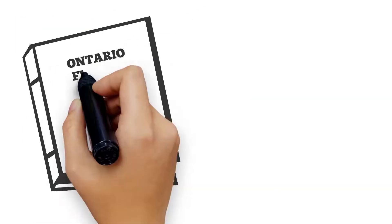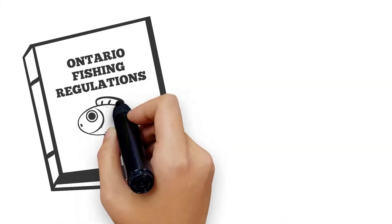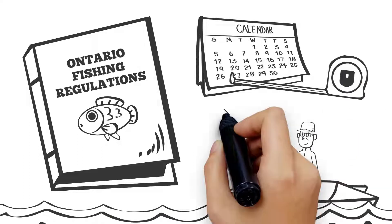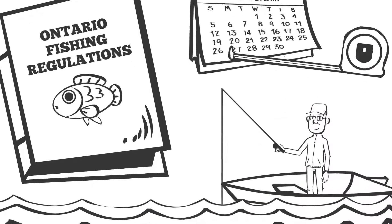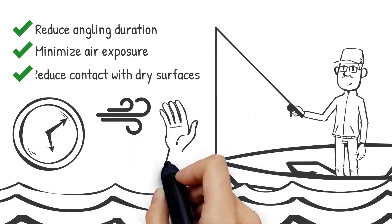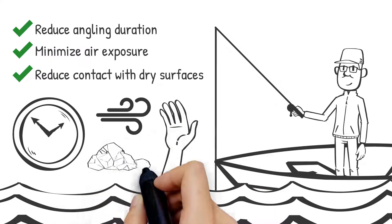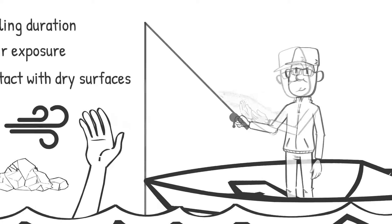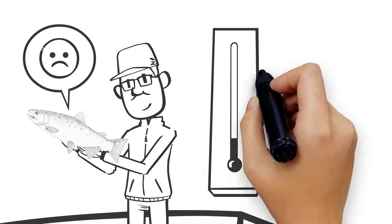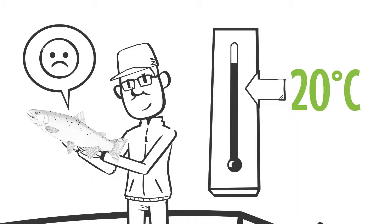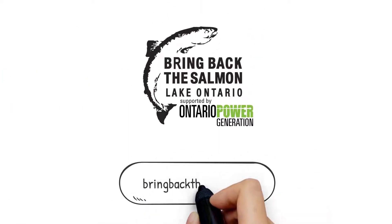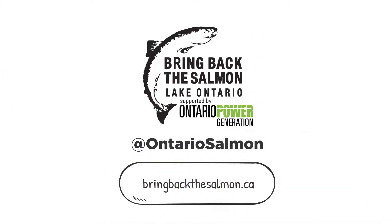Check the Ontario fishing regulations for seasons and size limits. If practicing catch and release, you should reduce angling duration, minimize air exposure, and reduce their contact with dry surfaces. And remember, salmonids do poorly when angled in water temperatures exceeding 20 degrees Celsius. For more information, visit our website or follow us on social media.